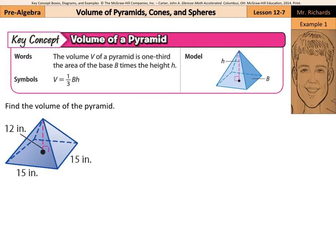Our first example deals with the volume of a pyramid, and this can be found by taking one-third the area of the base times the height of the pyramid. Here in our first example, we can write down that formula: volume equals one-third the area of the base times the height of the pyramid.